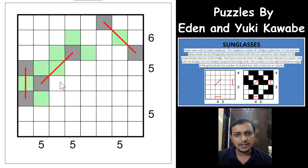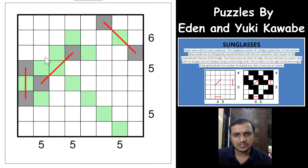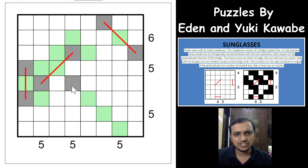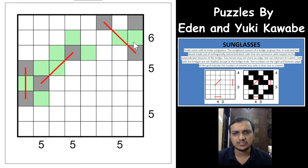There is an excellent trick here: the perpendicular bisector cells of a bridge will never be shaded for its own lenses. If such a cell is shaded, both lenses would touch each other orthogonally, which is not possible. So for any particular sunglass, the perpendicular bisector cells will never be shaded. This trick helps unshade certain cells — if you shade a perpendicular bisector cell, both lenses would be touching, which is impossible.